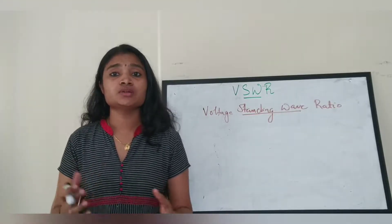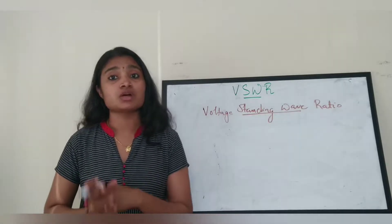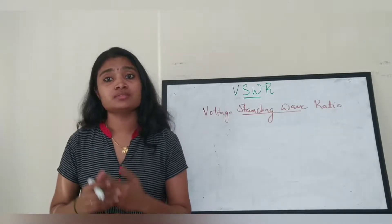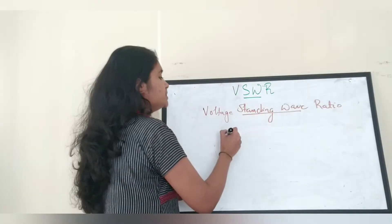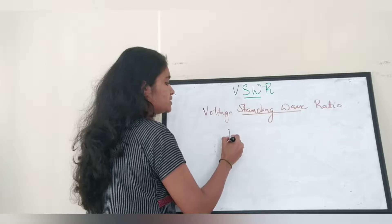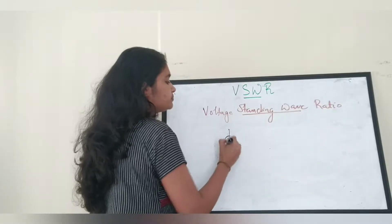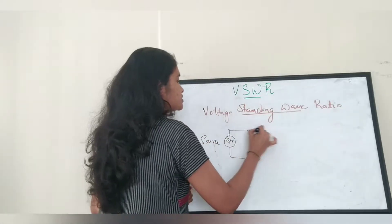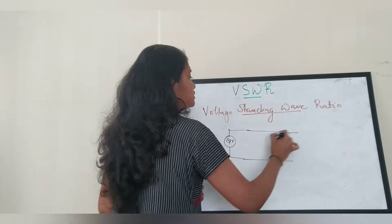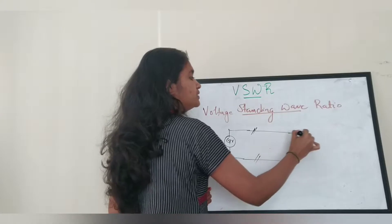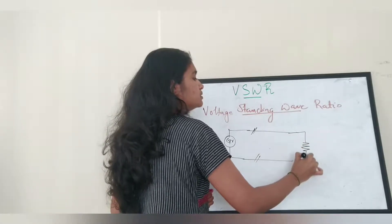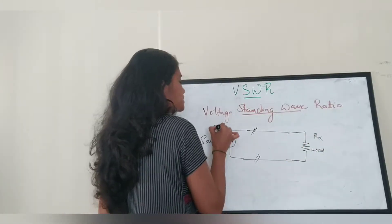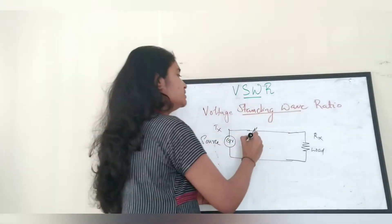Now we have talked about the general real-world aspects. Let's talk about the transmission line case — how a standing wave forms in a transmission line. Consider the basic structure of a transmission line: there is a generator or source connected to a transmission line, and there is a load at the receiving side.